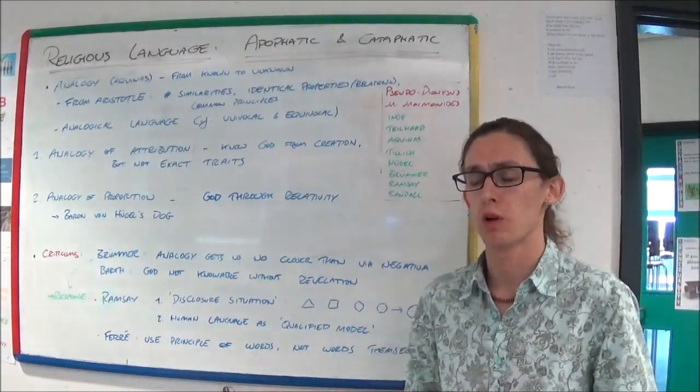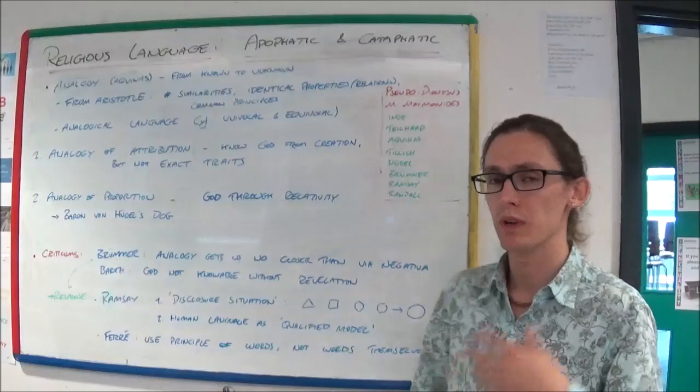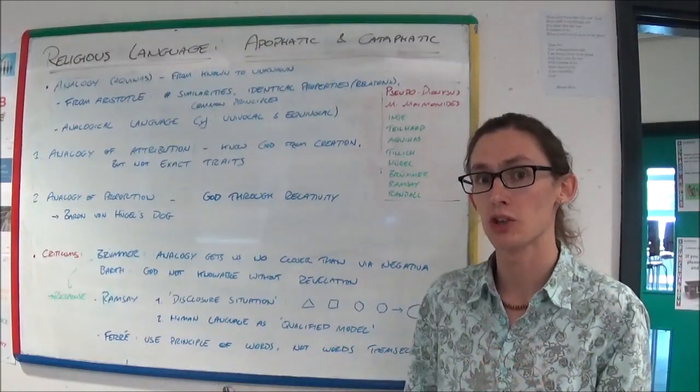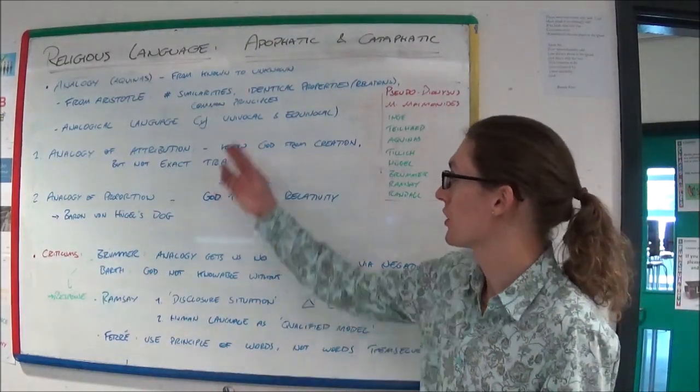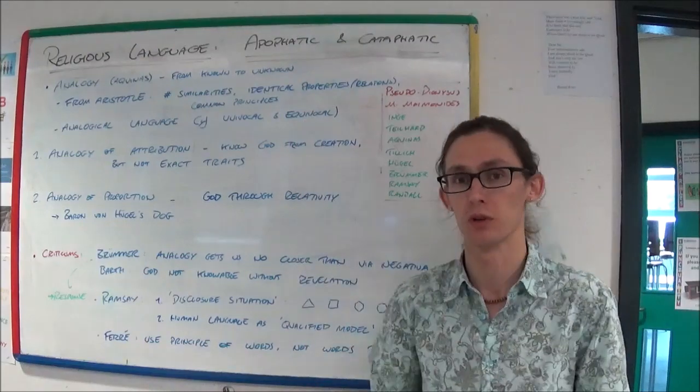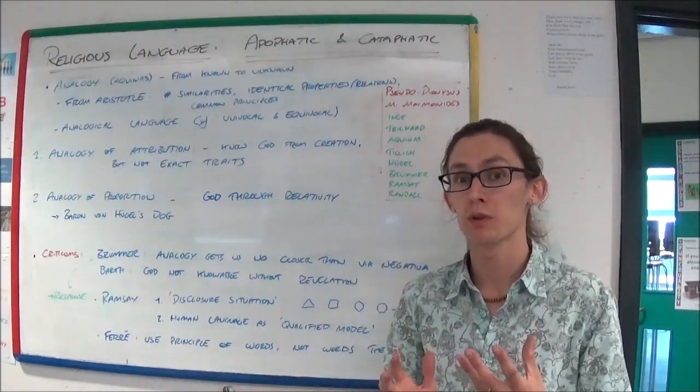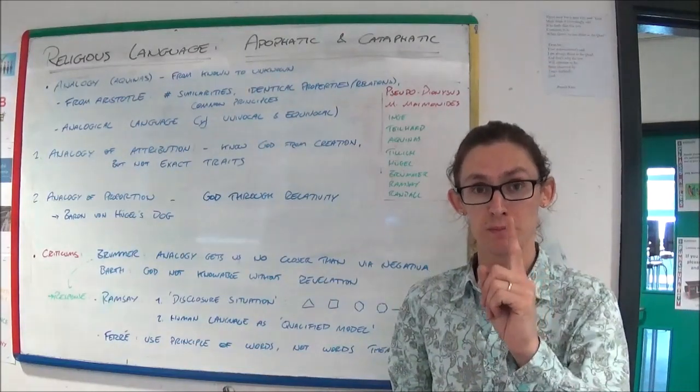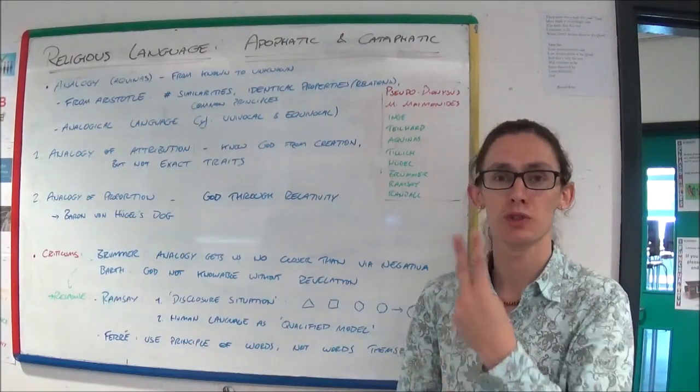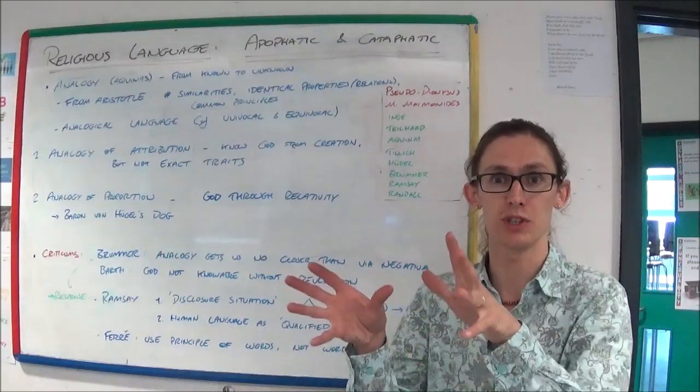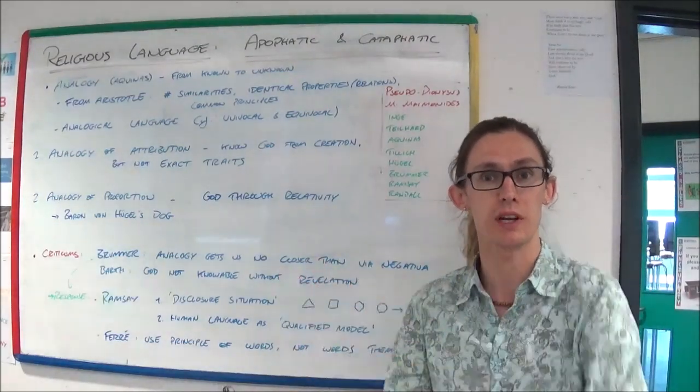The point that Aquinas wanted to get across is that when you use an analogy, you use analogical language rather than univocal or equivocal language. As a side point, univocal words have got one meaning. Equivocal words have got two meanings. So like, bat could be a little creature or it could be something you play cricket with.